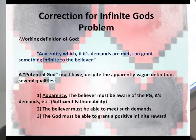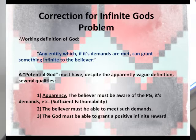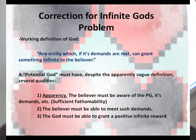Now, correction for the infinite gods problem. Pascal didn't have a working definition of god — he just presumed the Christian God. Here's my working definition: any entity which, if its demands are met, can grant something infinite to the believer. This is not the definition of the God, but a definition of a god — a 'potential god.' You're only going to choose one, but this definition covers all candidates.